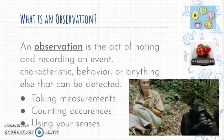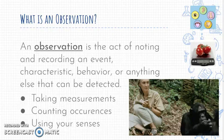As we enter part two of the scientific method, we're continuing to look at testing our hypothesis. After you've created your procedure with your materials list and step-by-step instructions, now you get to make observations as you run your experiment. An observation is noting or recording a physical event, characteristic, or behavior — anything that can be detected. You might take measurements, count things, or use your senses: smell, feel, look, or hear.